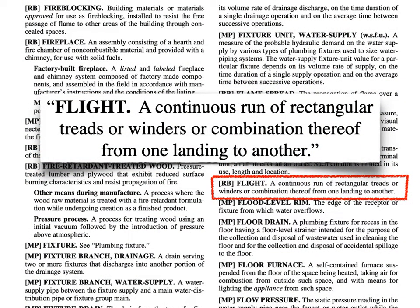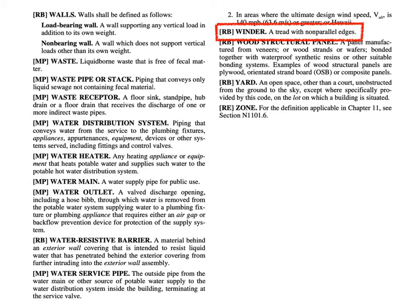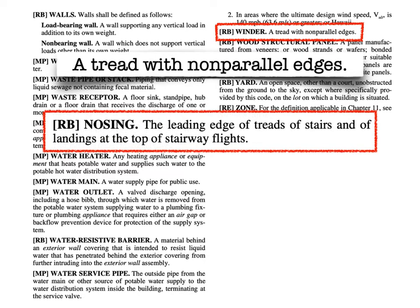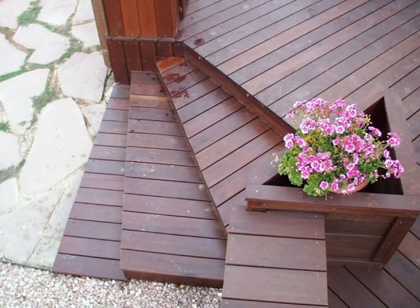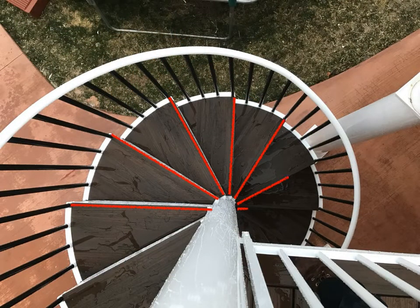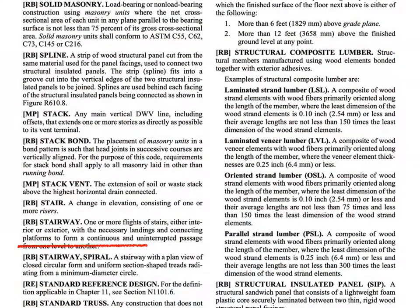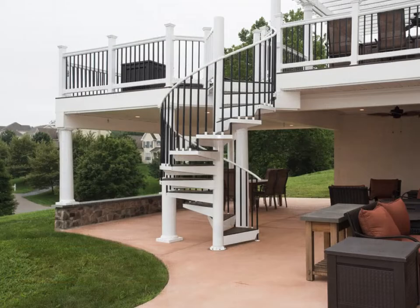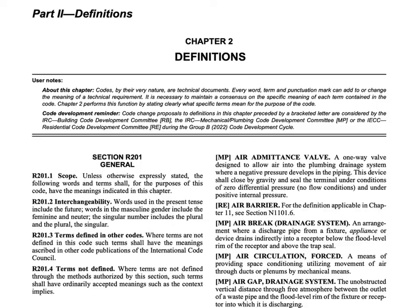Looking one more time at the definition for flight, we also see the term 'winders.' A winder is defined as a tread with non-parallel edges — which refers to the nosing. Here's an example of winders with non-parallel nosings. And what about these? These also have non-parallel edges and nosings, but this isn't winders — because those are spiral stairs. Spiral stairs have their own fancy definition, but you know what spiral stairs are, and if you have to ask if something is a spiral stair, then it's not. Now with that, we are finally done with these definitions, and we're going to move on and start talking about stairs.